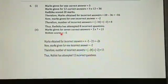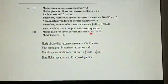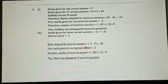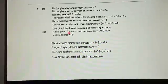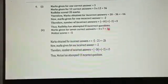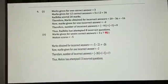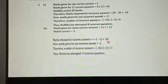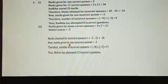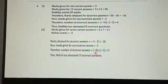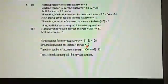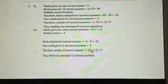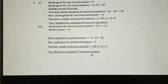Next: Mohini scored minus 5 marks in this test though she got 7 correct answers. For 7 correct answers she will score 3 multiplied by 7 equals 21 marks. But Mohini's score is minus 5 marks. So marks obtained for incorrect answers equals minus 5 minus 21, which equals minus 26. Marks given for 1 incorrect answer is minus 2. So minus 26 divided by minus 2 equals 13. Mohini has attempted 13 incorrect questions.